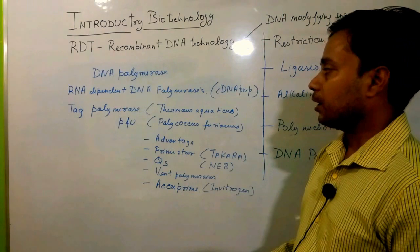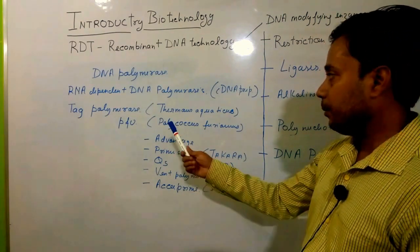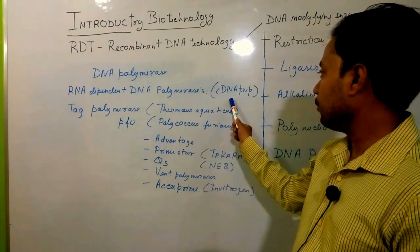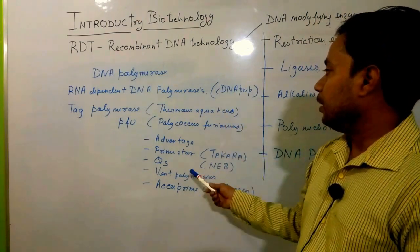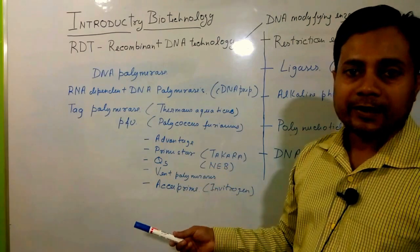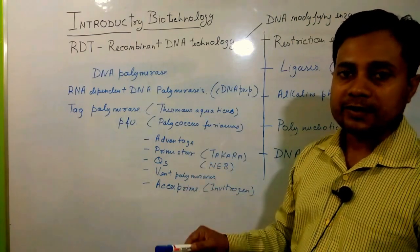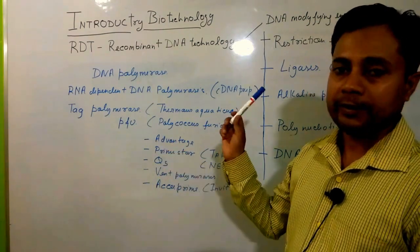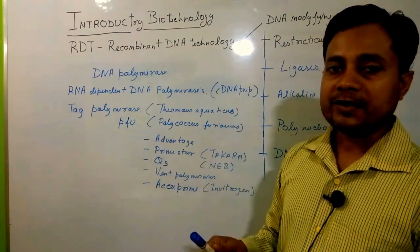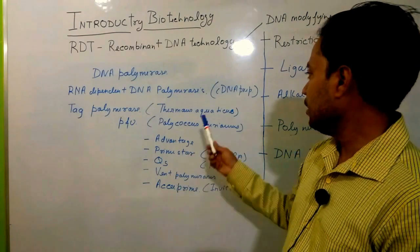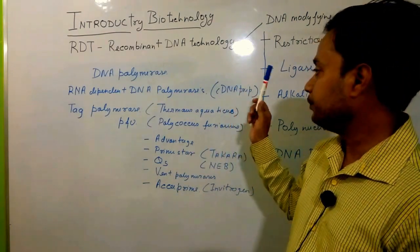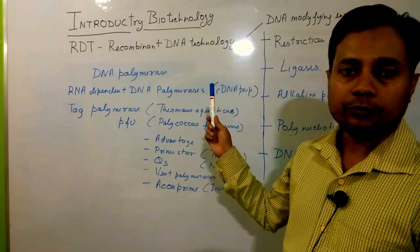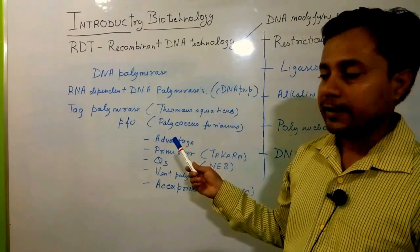Another important class is RNA-dependent DNA polymerase, which is used for cDNA preparation. It utilizes RNA as a template and incorporates nucleotide molecules on the RNA template to form a single-stranded cDNA — complementary DNA — which is utilized for expression studies as well as cloning of ESTs (expressed sequence tags).